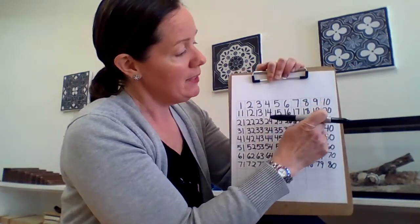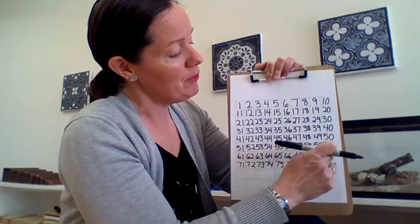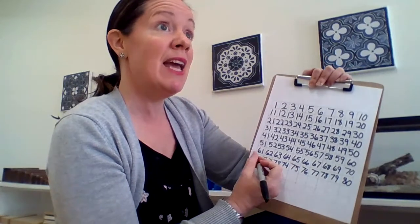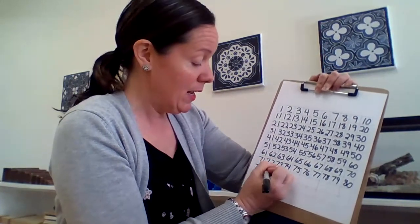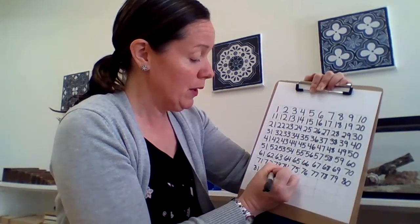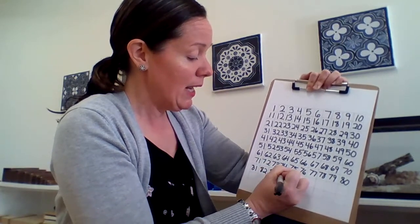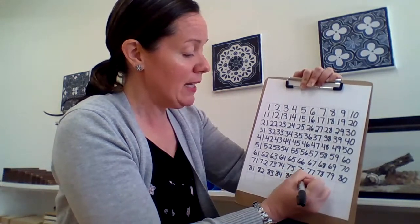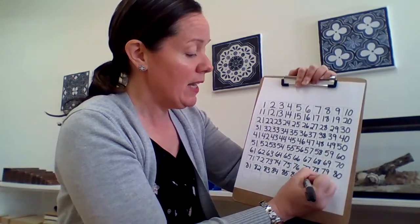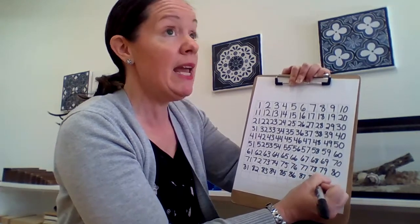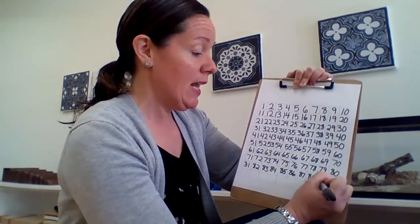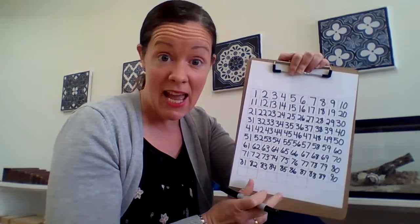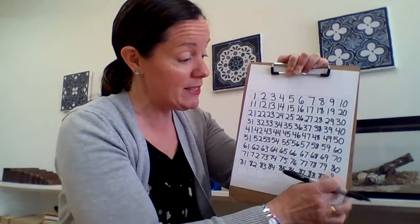And look how we have all the tens lined up. 10, 20, 30, 40, 50, 60, 70, 80. What do we have next? 81, 82, 83, 84, 85, 86, 87, 88, 89, 90. 90 is nine tens and zero units. 90.